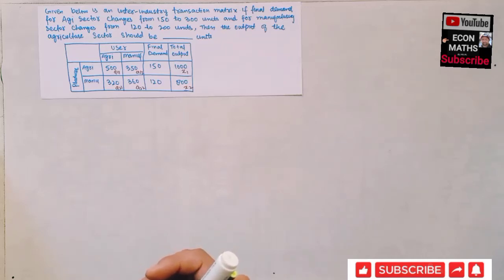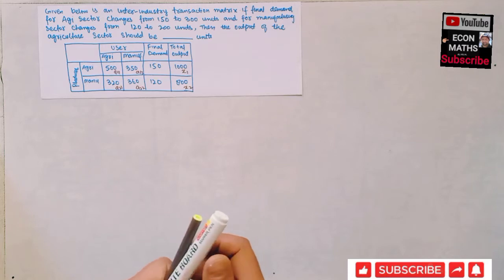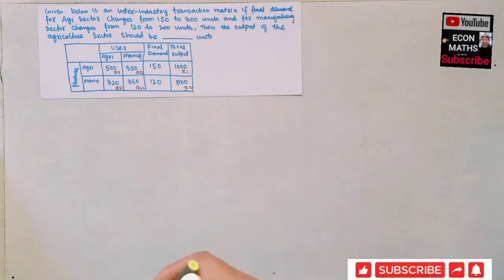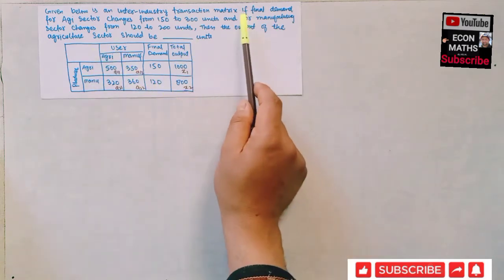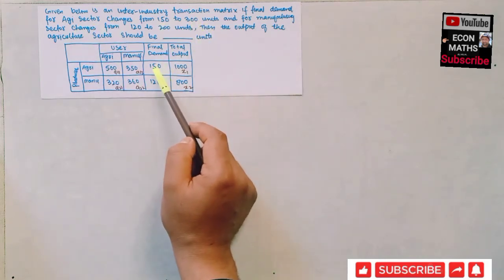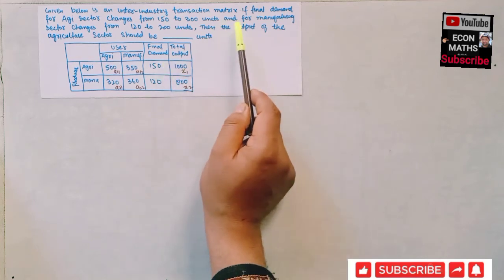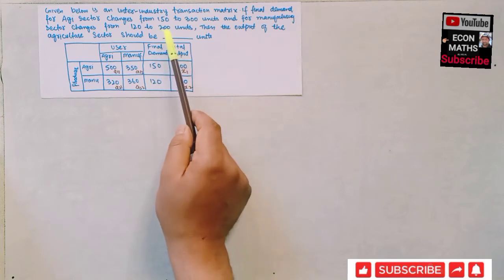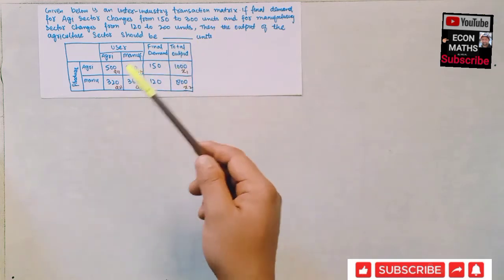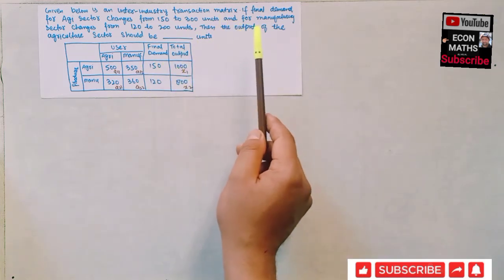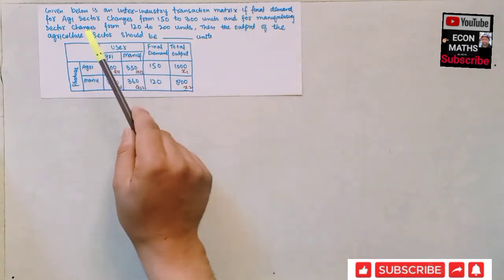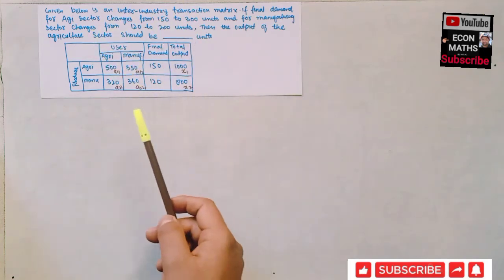Another question asked in the GATE Economics paper of 2021: given an inter-industry transaction matrix, if the final demand for the agriculture sector changes from 150 to 300 units, and for the manufacturing sector changes from 120 to 200 units, what will be the output level of the agricultural sector?